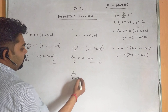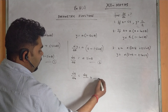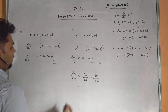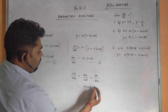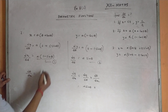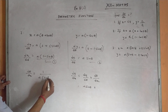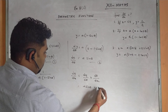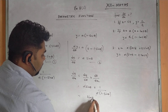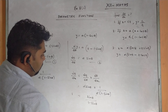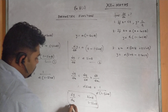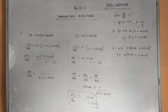To find dy/dx: dy/dx = (dy/dθ)·(dθ/dx). We have dy/dθ = a·sin θ and dx/dθ = a(1 - sin θ), so dθ/dx = 1/[a(1 - sin θ)]. Therefore dy/dx = a·sin θ · 1/[a(1 - sin θ)]. The a's cancel, giving dy/dx = sin θ / (1 - sin θ).